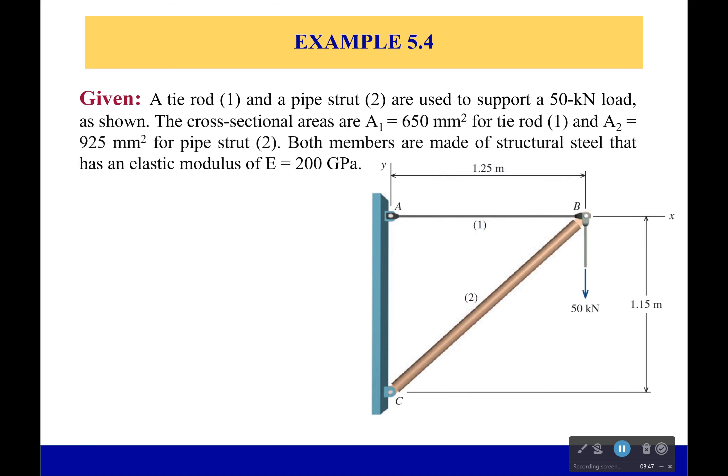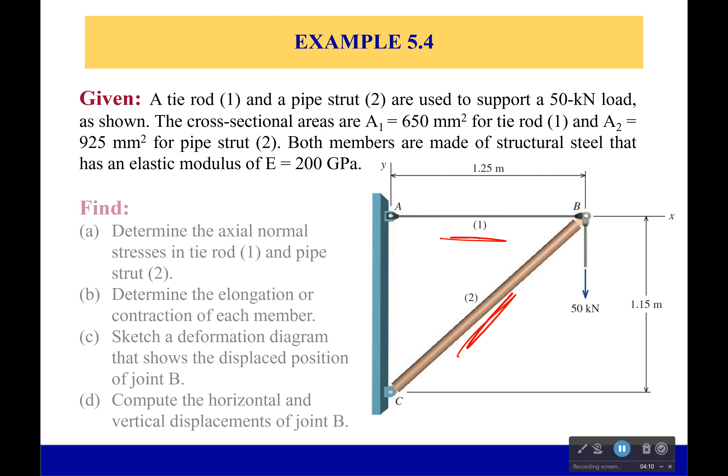So right here what you see is we have a pipe strut right here and we have a tie rod number one. Now the area of the tie rod is 650 millimeters squared and the area of the pipe strut 925 millimeters squared. Now made from the same structural steel which has a modulus of elasticity of 200 gigapascals. And what we want to know is at one point we're going to figure out where this actually moves to. We have a whole lot more to do before then. First we're going to figure out the axial normal stresses in the tie rod in this strut. We're going to determine the elongation and then finally we're going to determine the displacement of point B.